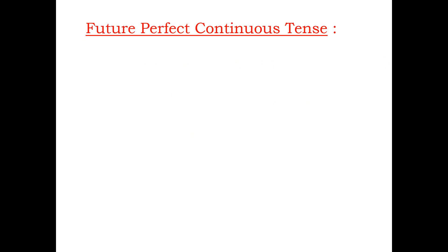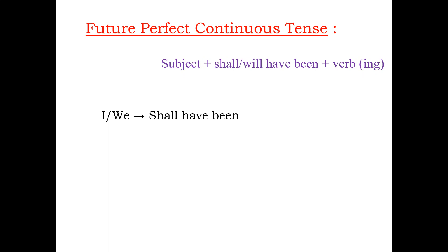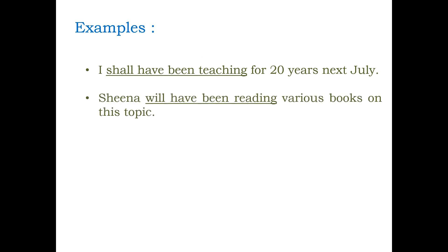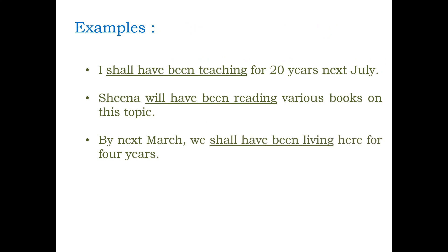Now we come to future perfect continuous tense. It is used for actions which will be in progress over a period of time that will end in future. The sentence is formed with subject plus shall or will have been plus verb with ing. I and we are used with shall have been. You, they, he, she or it are used with will have been. Examples: I shall have been teaching for 20 years next July. Sheena will have been reading various books on this topic. By next March, we shall have been here for 4 years.